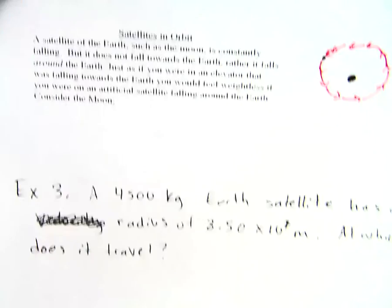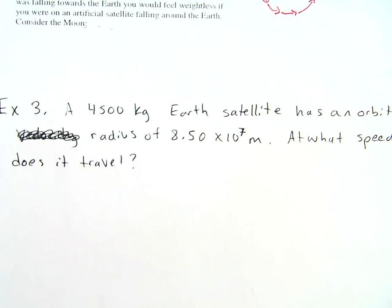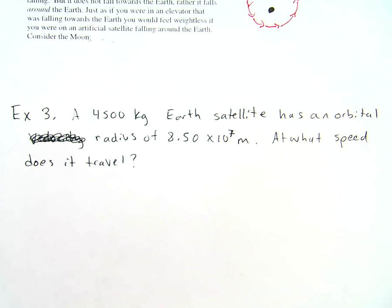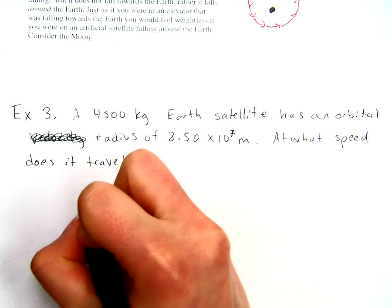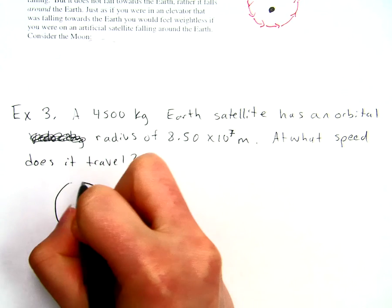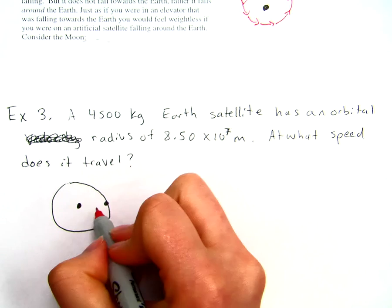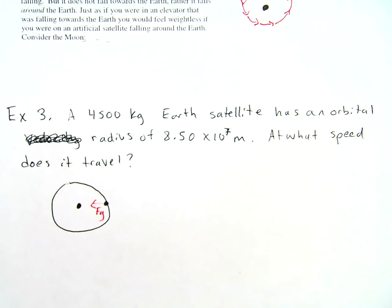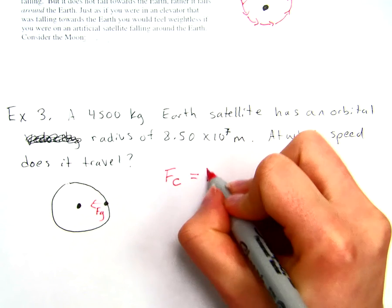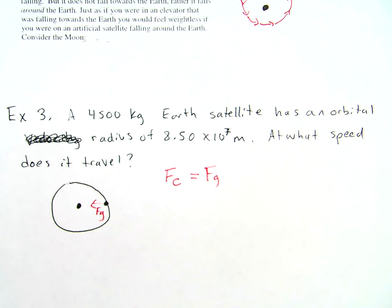I have one last thing that we can calculate from this information. I'm going to try to make it quick because I know this video is getting pretty long. Here we have a 4500 kilogram Earth satellite. It has an orbital radius of 8.5 times 10 to the 7th meters. At what speed does it travel? If you've already watched the vertical circular motion videos, we had a case very similar to this. I'm going to draw a quick free body diagram just to show you what I mean. Here's the Earth, and we have some object orbiting the Earth. What is the only force causing that satellite to continue in its circular motion? Well, it's the force of gravity.